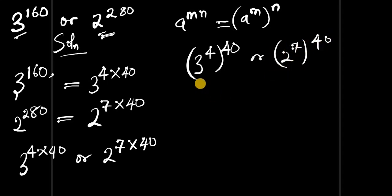At this point, 3 to the power 4 equals 81 raised to the power 40, and 2 to the power 7 equals 128 raised to the power 40.